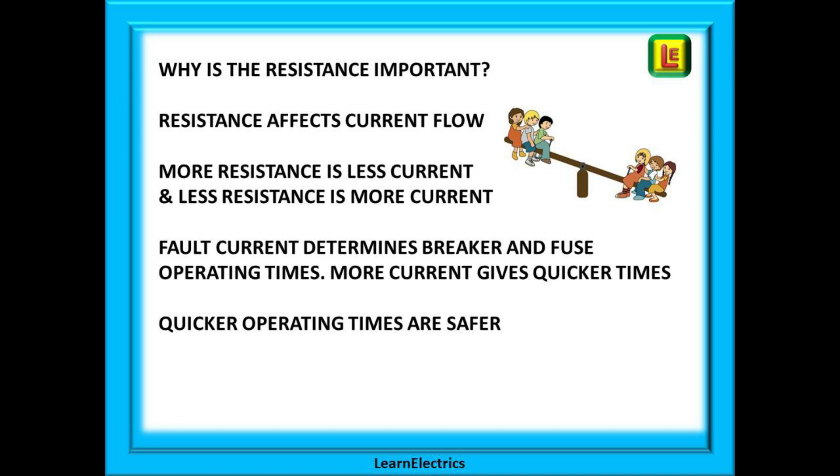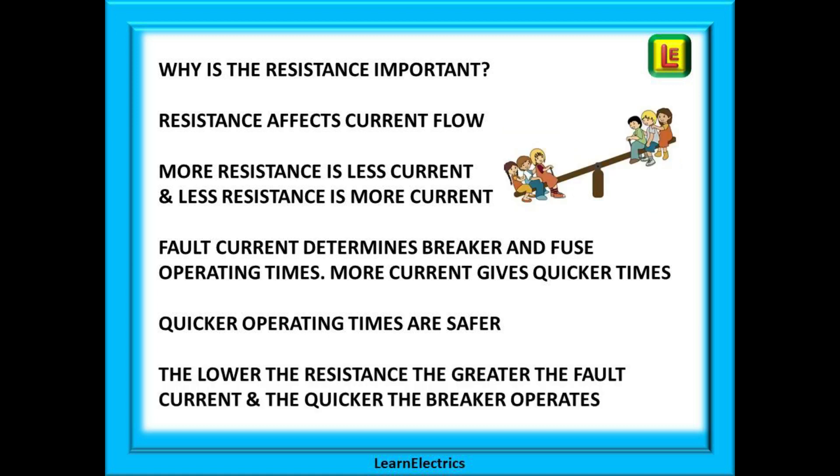It is the fault current that determines the operating time of the breaker or fuse. Ideally we want the biggest possible current to give us the quickest operating time, and to get the biggest current possible we need to have the lowest resistance possible. The quicker the operating time the quicker the fuse blows and the quicker the circuit is made safe. Putting that all together, the lower the resistance of R1 plus R2, the greater the fault current, and the quicker the circuit breaker operates and makes the circuit safe.